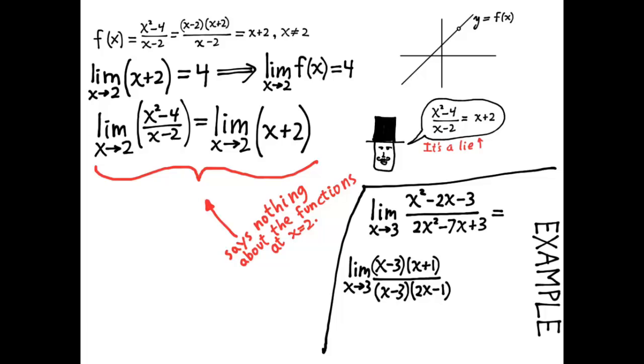So the x minus 3 over x minus 3 is the 0 over 0 problem. We have factored out the 0 over 0 problem and we can cancel it. And once we cancel it, we can now use the other theorems about limits and just simply substitute 3 for x in this expression. And then we compute it and we get the answer 4 fifths. So that's the first example.